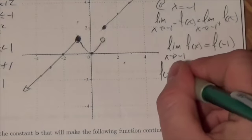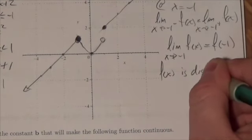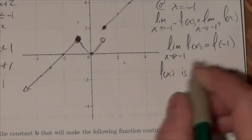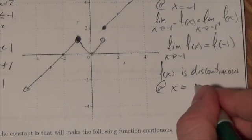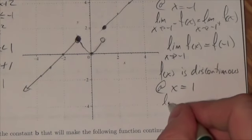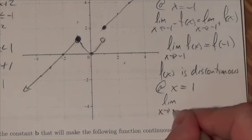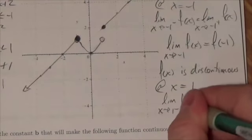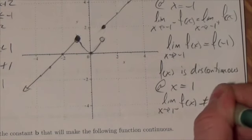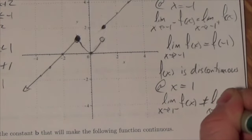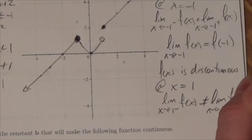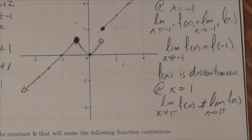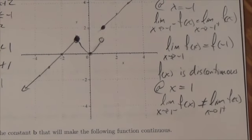However, f of x is discontinuous at x equals positive 1 because the limit as x approaches positive 1 from the left of f of x does not equal the limit as x approaches 1 from the right of f of x. And because the limit doesn't exist, there's no way for this to be continuous. So, you can get off! Thank you.